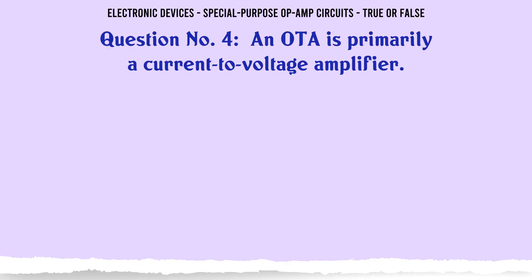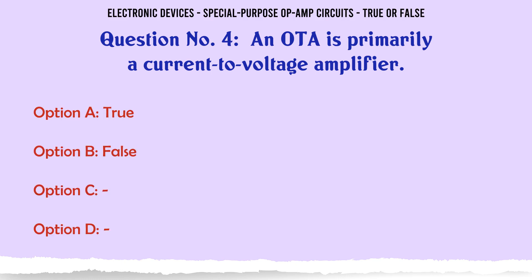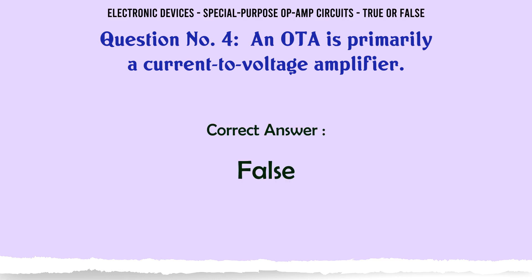An OTA is primarily a current to voltage amplifier. A. True. B. False. C. D. The correct answer is False.